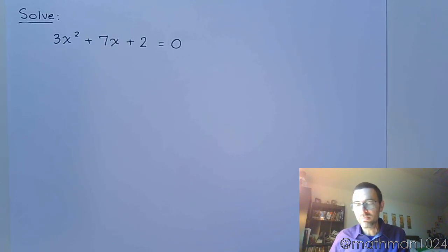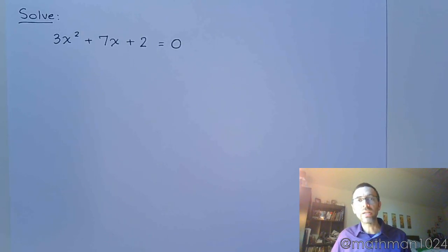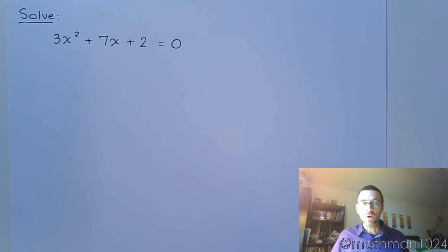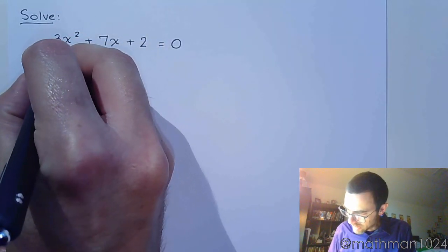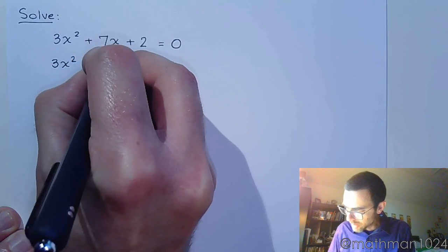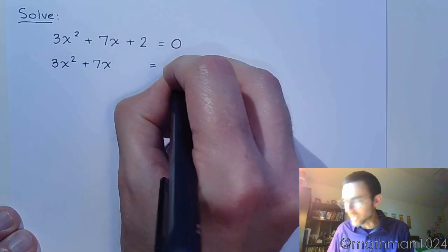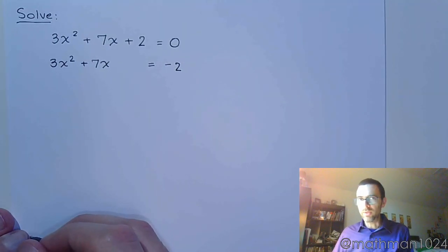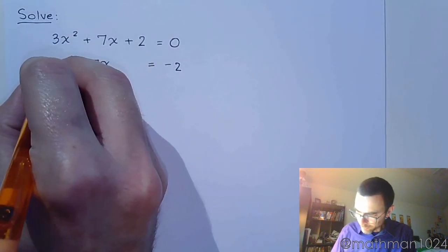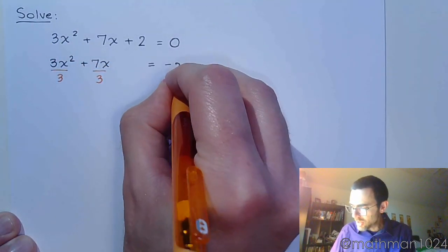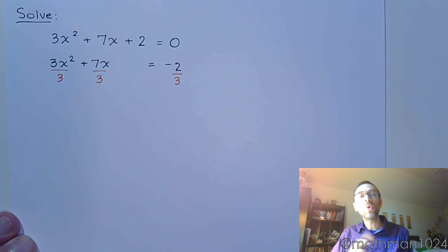We have another quadratic equation to solve. We've been talking about completing the square, so let's do that here. This one may be kind of messy. The first step is to move the constant term to the other side so that one side of the equation has only variable terms. Move that two to the other side and leave some space. The next step is to make sure we have a lead coefficient of one, meaning we divide by whatever we see here. If this step causes fractions, we'll talk about another method, but completing the square will always work.